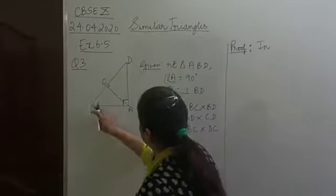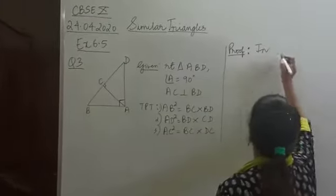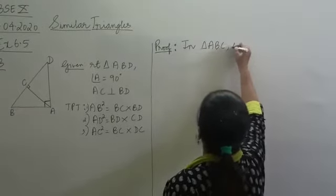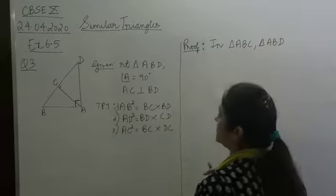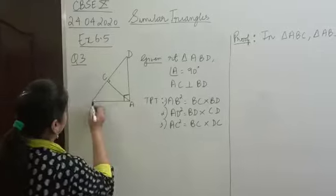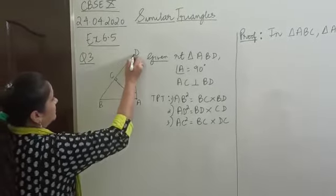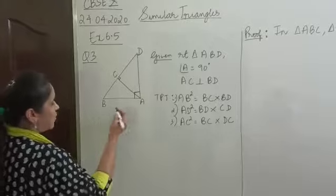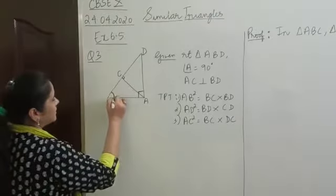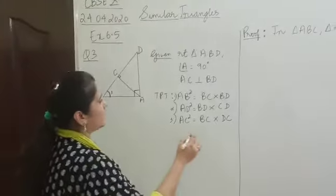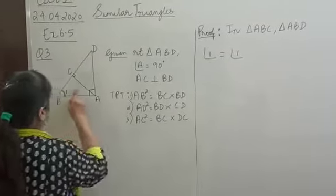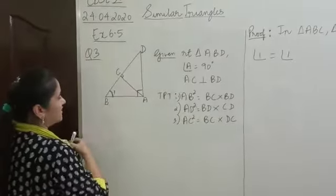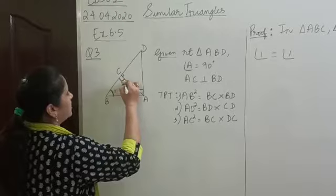So, let's identify the two triangles which have AB as a common side. The triangles are ABC and ABD — both these triangles have AB as a side. Now, let's show that these two triangles are similar. Both triangles have a common vertex B, so if we call this angle 1, angle 1 is equal to angle 1 — it's a common angle.